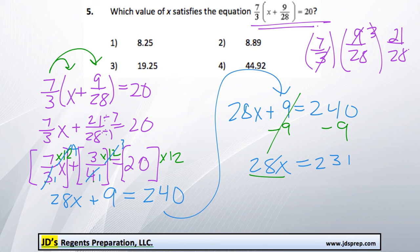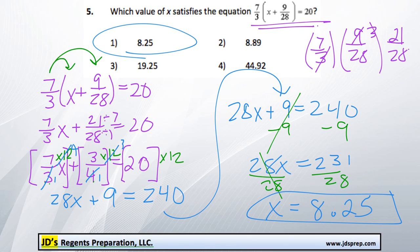And then to finish off, we would divide both sides here by 28. And if you calculate that, we get an answer of 8.25, which is option number 1.